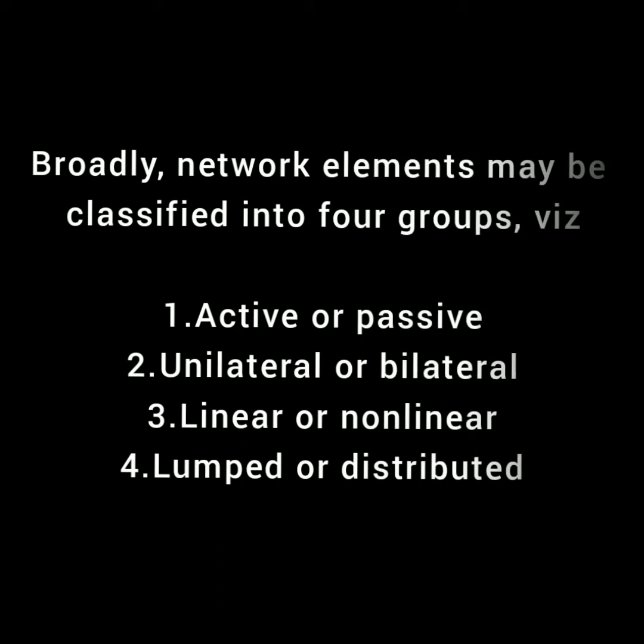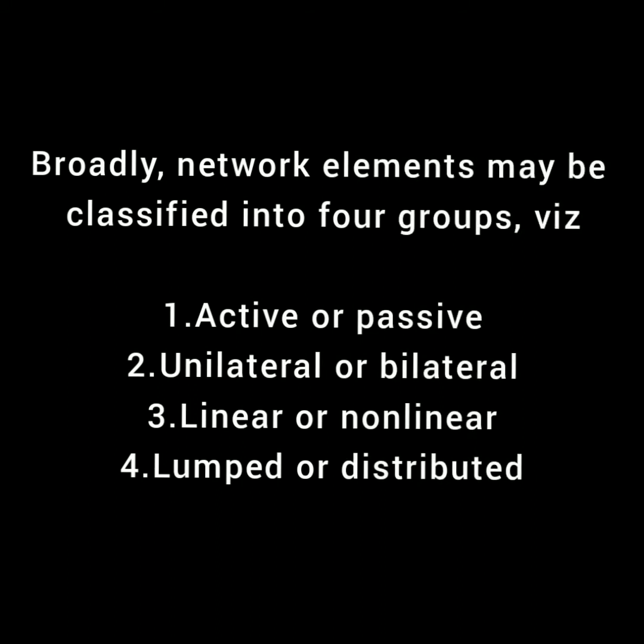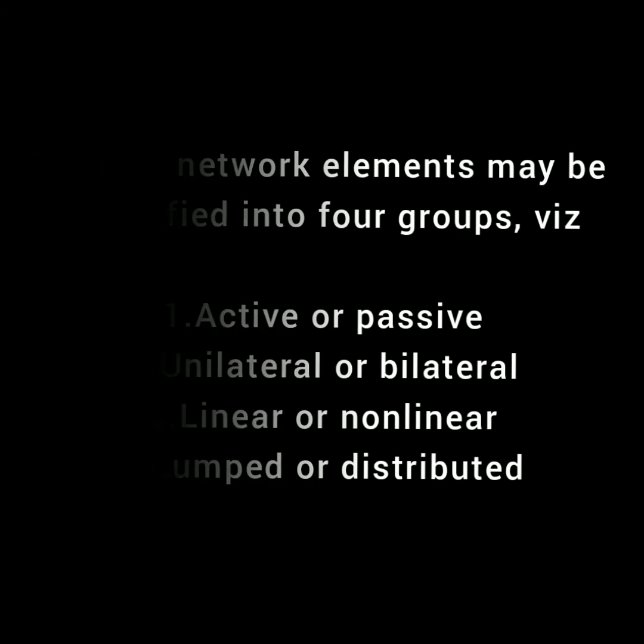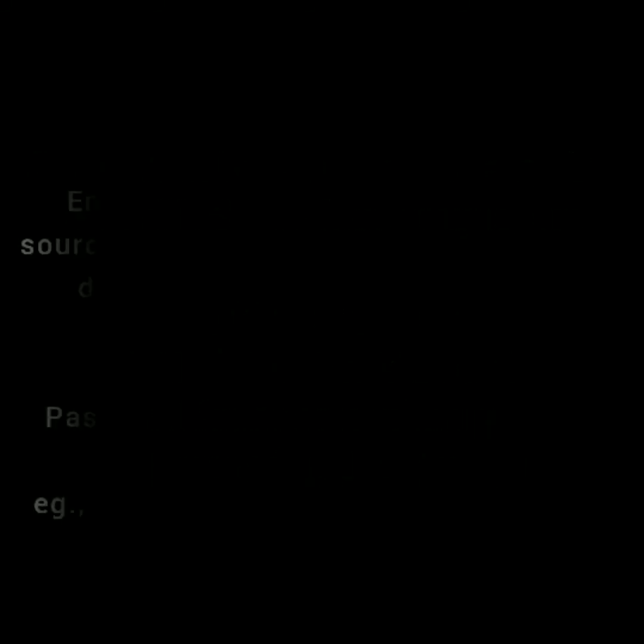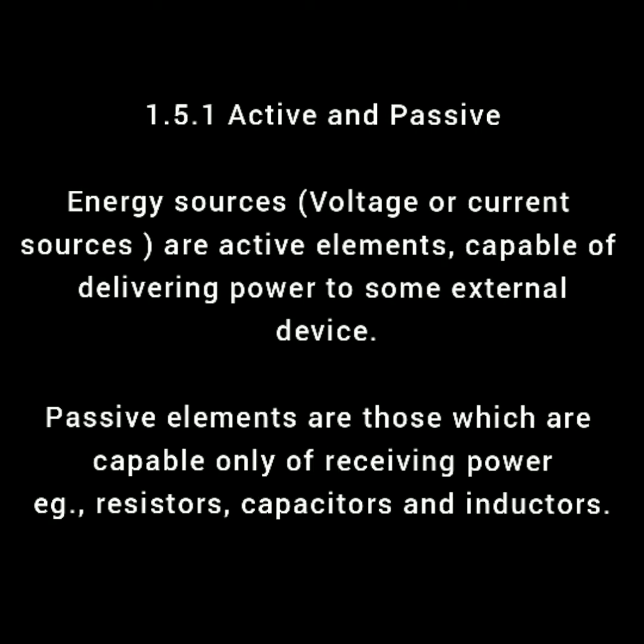Broadly, network elements may be classified into four groups: active or passive; unilateral or bilateral; linear or non-linear; and lumped or distributed. The first classification is active and passive. Energy sources — voltage or current sources — are active elements capable of delivering power to some external device. An active element is capable of delivering an average power greater than zero to some external device over an infinite time interval.